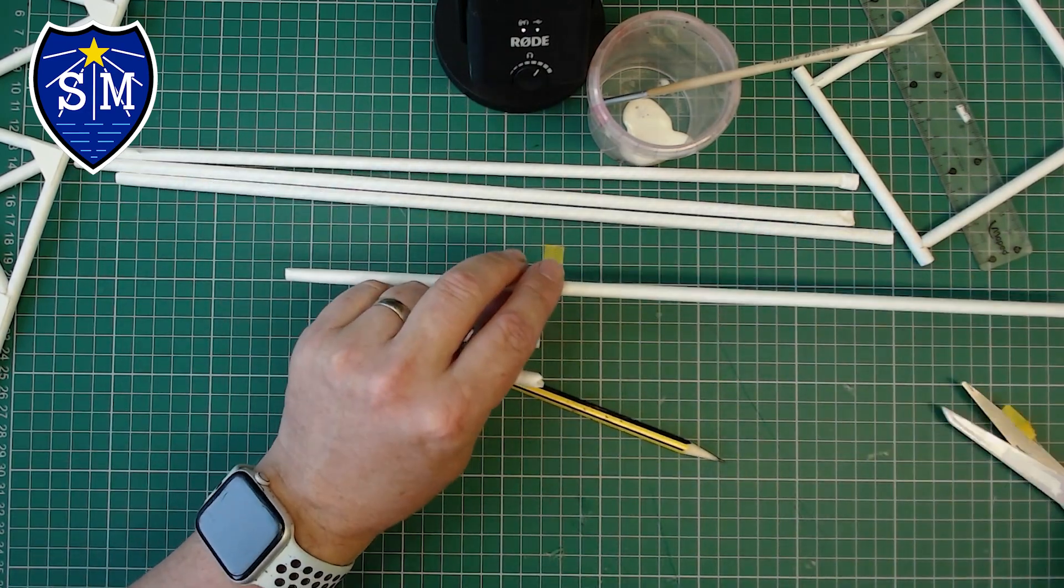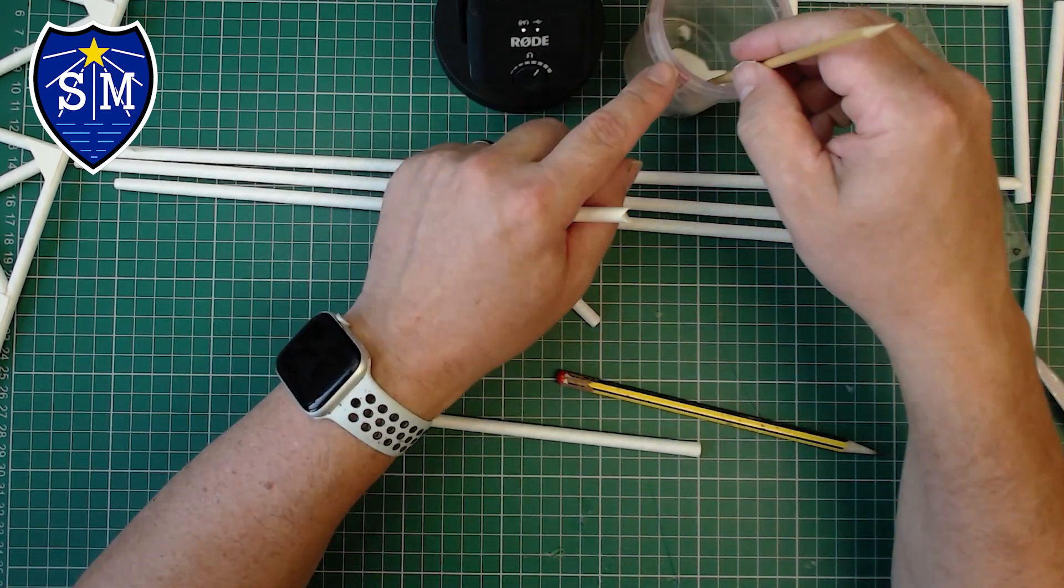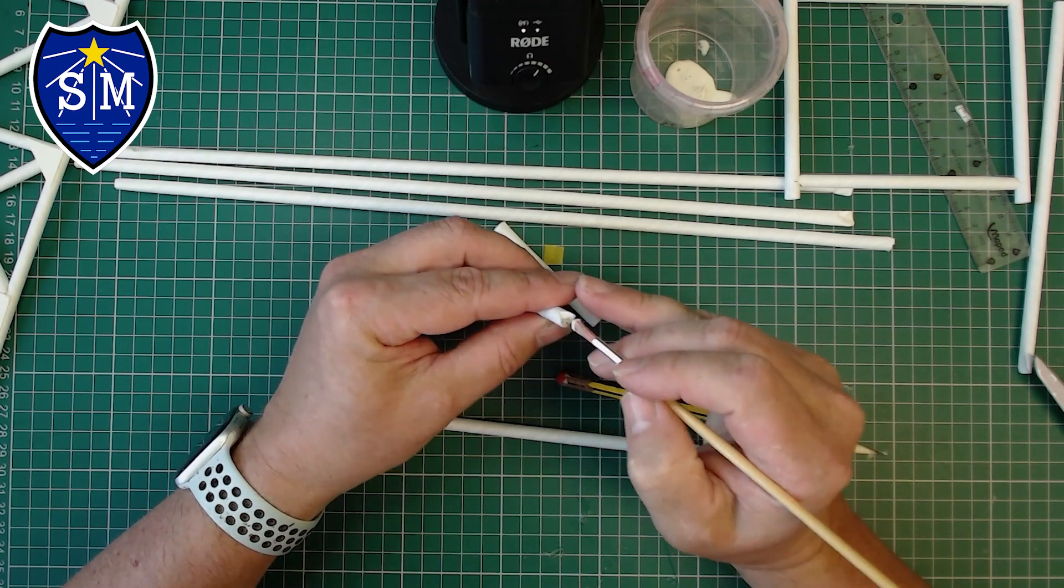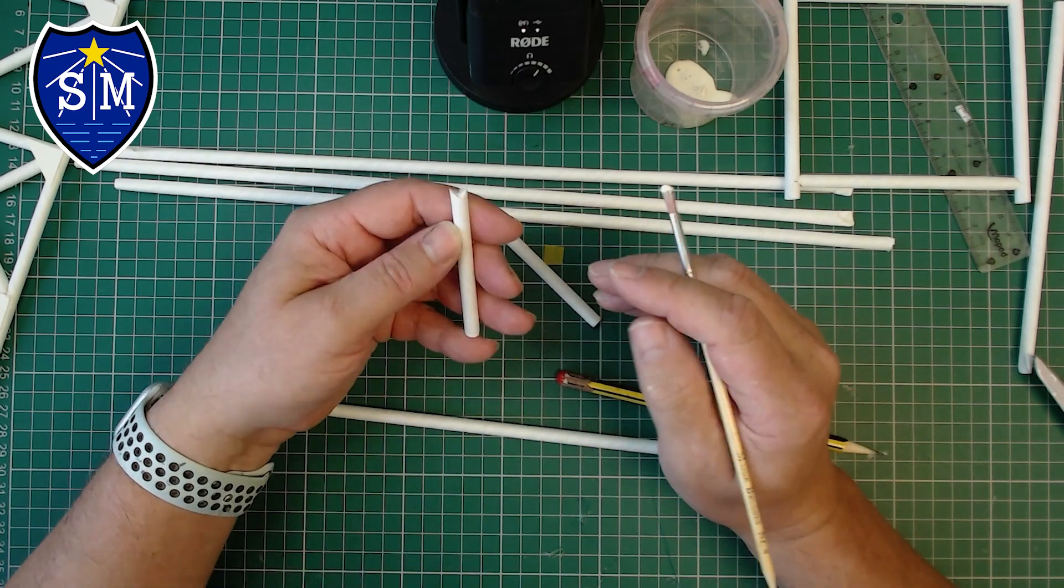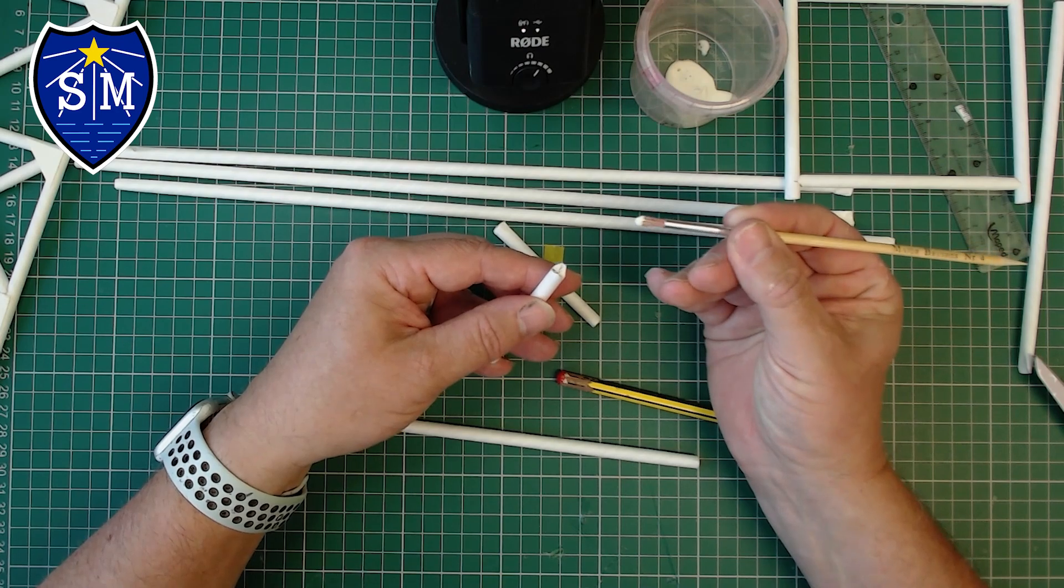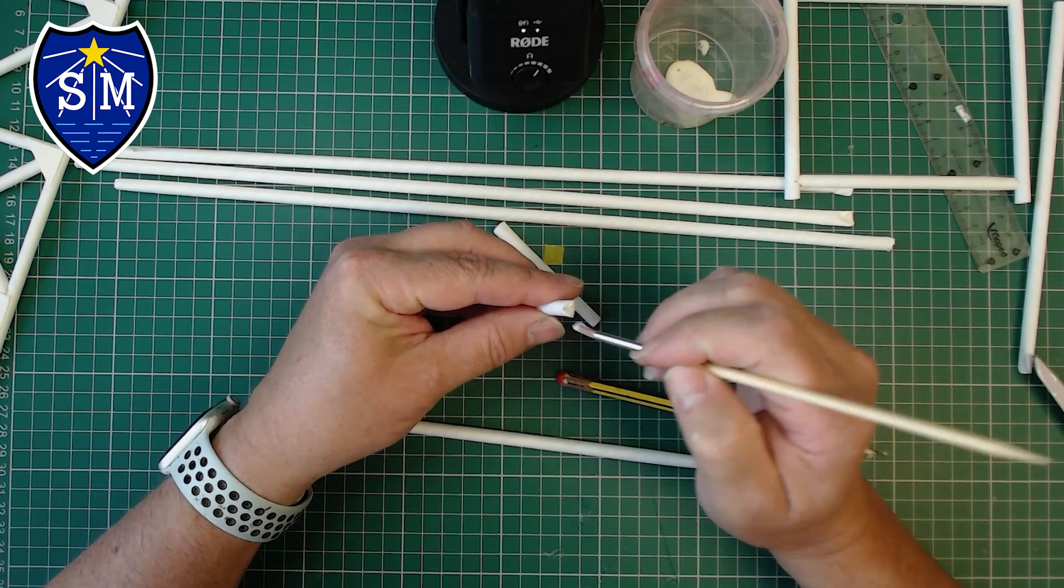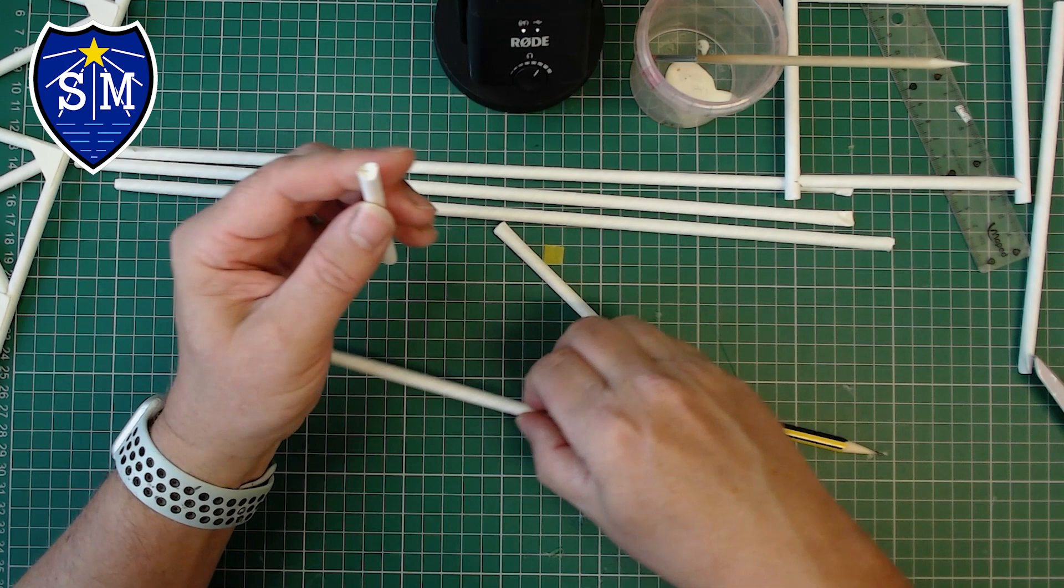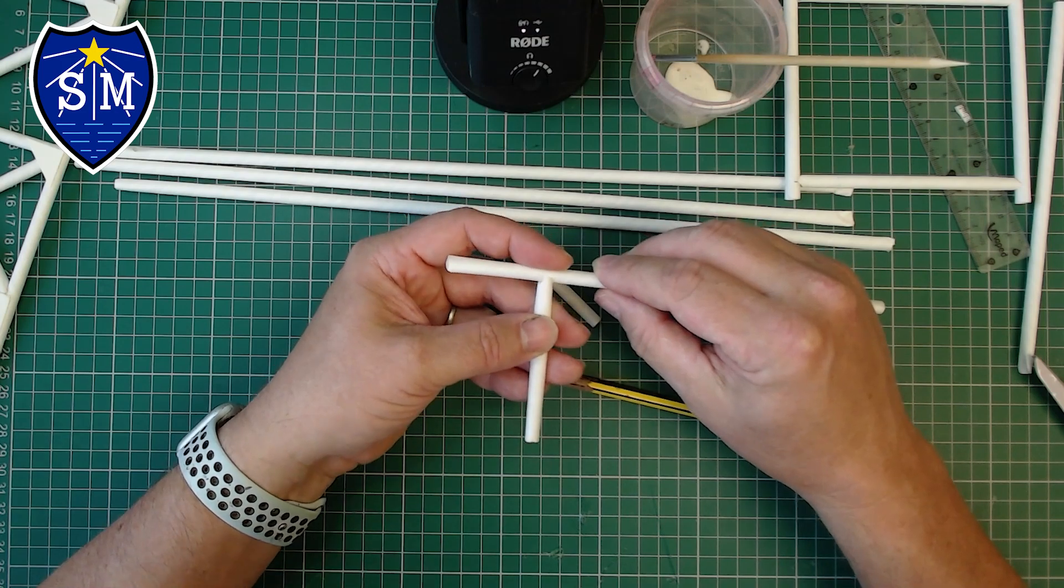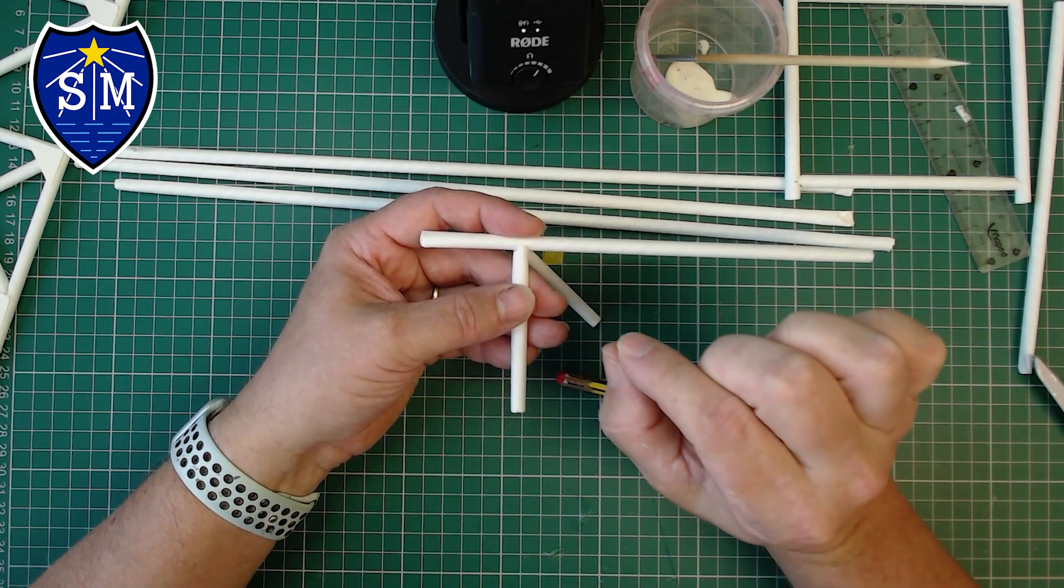Now I'm going to take a bit of PVA, and this is super important. Most people make the mistake of putting too much glue on their construction and it becomes wet and soggy. The key is using a small amount of glue. You can see I've got a little bit of glue on the end, I put that on and then I take most of it off. Then I put it in place and hold that for about 10 seconds.